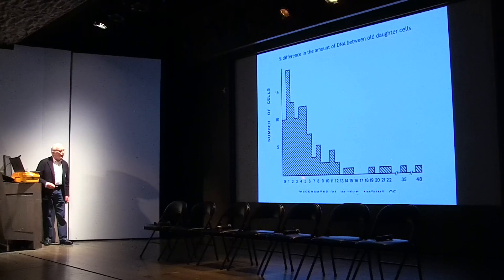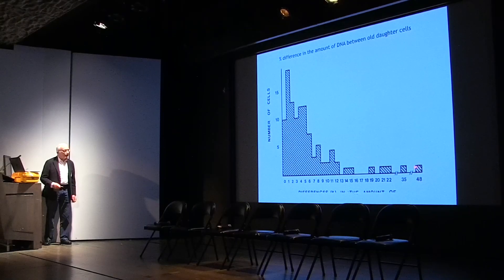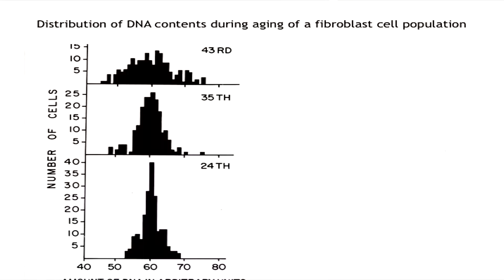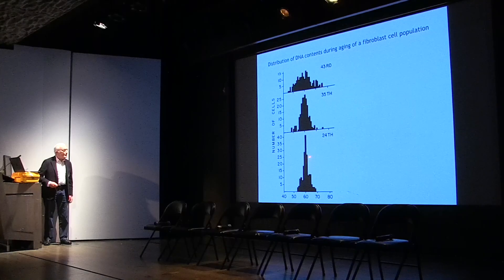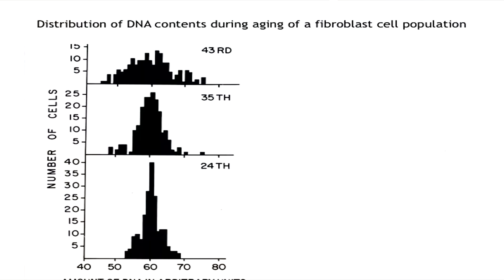In older cells, the differences between most sister cells is below 13%, but one can find already cells with 48% differences. This shows the distribution of DNA contents during aging of a fibroblast cell population at different ages. As you see, the distribution is always a Gaussian distribution, but the differences become increasingly spread out, showing that the differences in cells increase with aging.